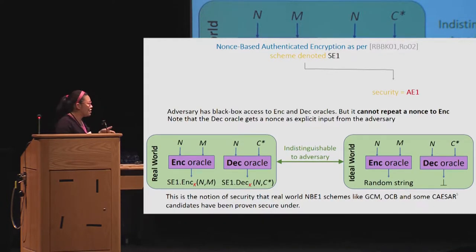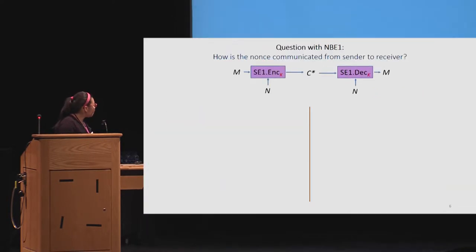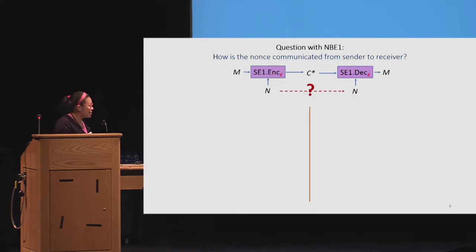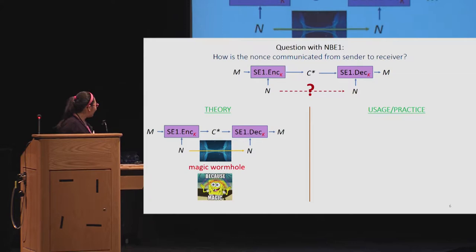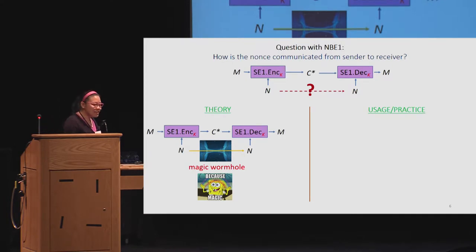To capture the idea of a nonce, we don't let the adversary repeat a nonce to the encryption oracle, but it can repeat nonces to decryption however it likes. The main question that motivated all our research is: how does this nonce that goes into encryption get over to decryption? We realized there's a difference between how it was presented in theory and how it actually happens in practice. In theory, it seems like between encryption and decryption it sort of magically gets there.